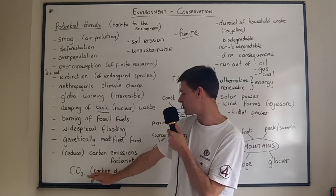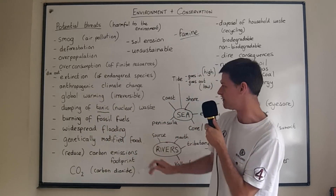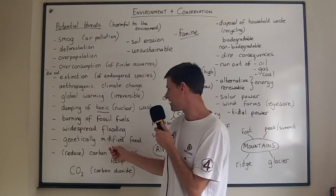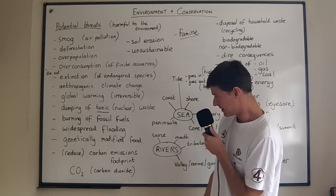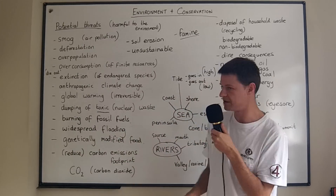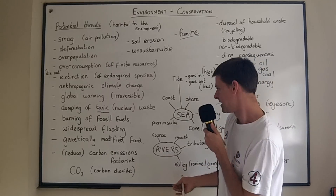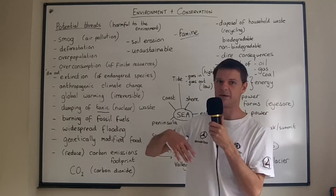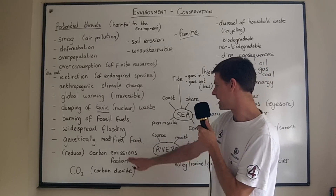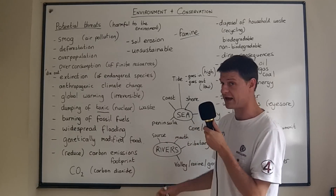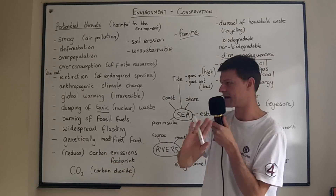The burning of fossil fuels is supposed to increase the amount of carbon dioxide in the atmosphere and thereby lead to climate change, making it another environmental threat. Widespread flooding could also be a result of climate change. Genetically modified food is any food which has been genetically changed in a laboratory — the genes are altered, perhaps to improve the yield or change the product. It's a concern for many people because it may have dire consequences for your health. Dire consequences means really terrible consequences.